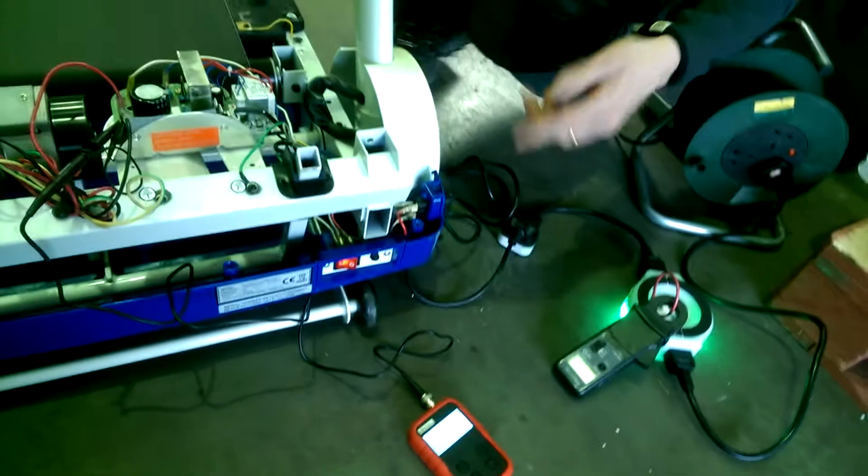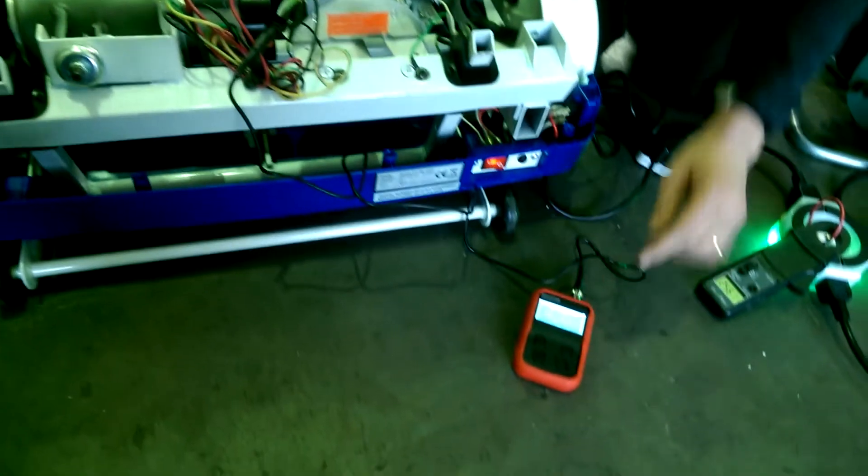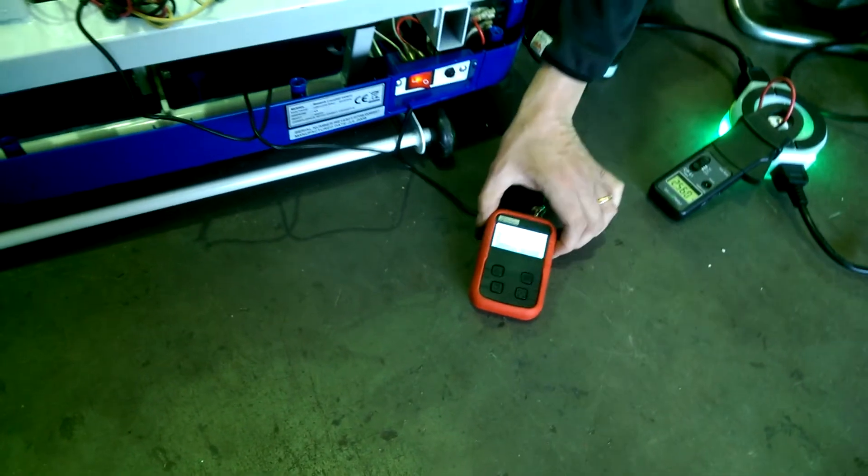We've got the machine running and we've also got this additional bit of test kit here so we can look at the output of the MCB. This is a portable oscilloscope.